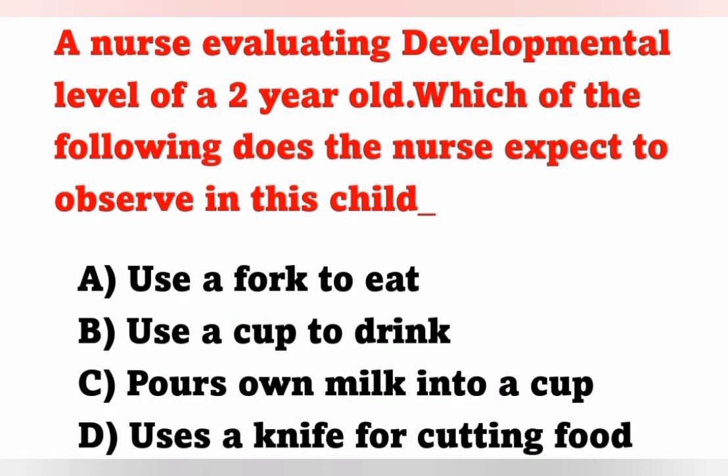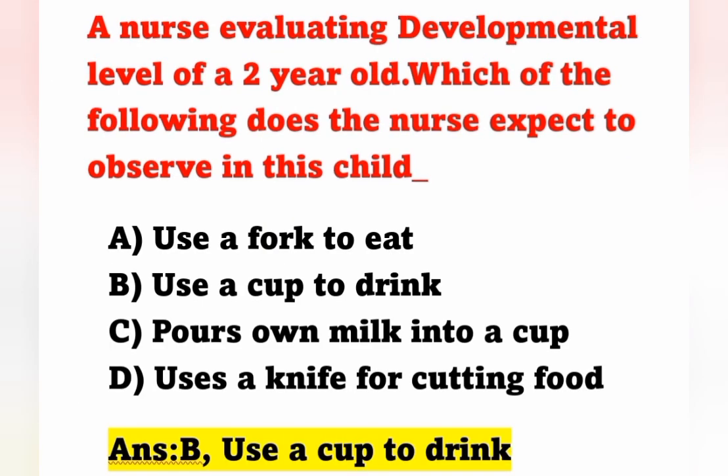Next question: A nurse is evaluating the developmental level of a two-year-old child. Which of the following does the nurse expect to observe? Option A: Use a fork to eat; Option B: Use a cup to drink; Option C: Pours own milk into a cup; Option D: Use a knife for cutting food. The correct answer is Option B — use a cup to drink. By the age of two years, the child can use a cup and spoon correctly, though some spilling occurs.